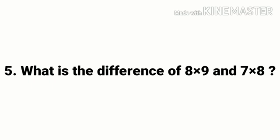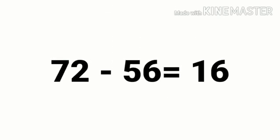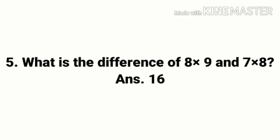Number 5: What is the difference of 8 into 9 and 7 into 8? For this sum first you have to calculate 8 into 9 and 7 into 8. So 8 nines are 72 and 7 eights are 56. Then you have to find the difference between 72 and 56, which comes to be 16. So for the 5th question the answer is 16.